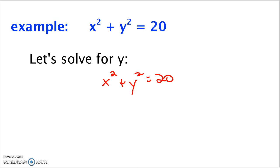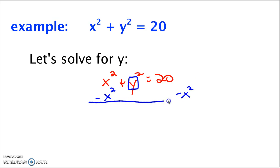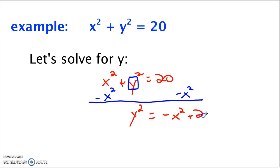Keep in mind that your end goal is to get y by itself — we don't want to do anything to that piece of the equation, but we want to move everything else away from it. There's an x squared being added, so subtract x squared from both sides. Note that 20 and negative x squared are not like terms and won't combine, so now I have y squared equals negative x squared plus 20. You could also write this as 20 minus x squared.